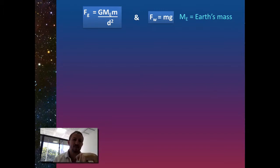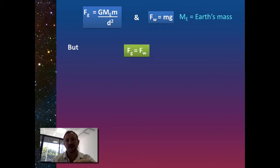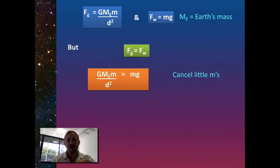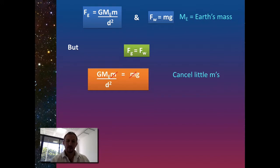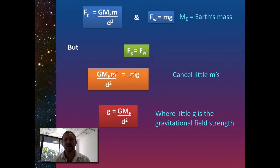We also know that a mass has a weight force: Fw equals mg. We can combine both equations — gravitational force and weight force — so Fg equals Fw. Putting the two equations together gives us GMₑm divided by d squared equals mg. We can cancel out the small m's, getting rid of the mass of the object relative to the Earth. So all we need is the acceleration g based on the distance we are from the Earth's surface: g equals GMₑ divided by d squared.